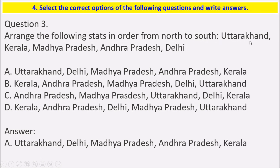Arrange the following states in order from north to south: Uttarakhand, Kerala, Madhya Pradesh, Andhra Pradesh, and Delhi. From north to south: first is Uttarakhand, then Delhi, then Madhya Pradesh in the center, then Andhra Pradesh below that, and in the south it is Kerala. So the order is Uttarakhand, Delhi, Madhya Pradesh, Andhra Pradesh, Kerala.